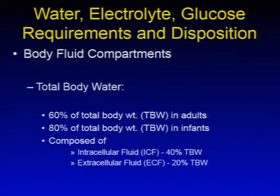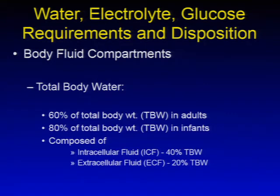Starting with water, electrolyte, and glucose requirements and disposition — body fluid compartments. Total body water is 60% of total weight in adults and 80% of total body weight in infants. Total body water is composed of intracellular fluid, or ICF, which is 40% of total body weight, and extracellular fluid, or ECF, which is 20% of total body weight.